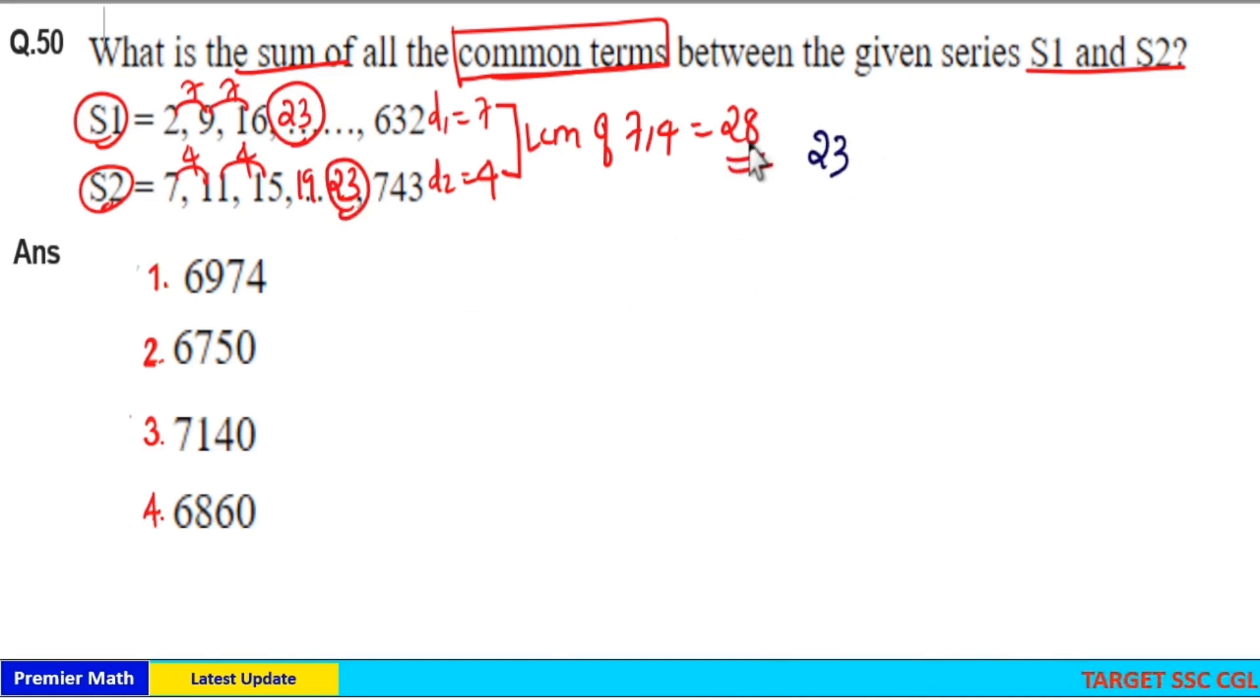Then you can apply the common difference. So second common term is equal to 23 plus 28, which is 51. Third common term from series S1 and S2 is 51 plus 28, which is 79.